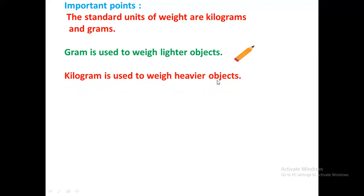Kilogram is used to weigh heavier objects just like an elephant, a dining table or a sofa. All these are heavy objects. So to measure the weight of these heavy objects we use a unit of kilograms.